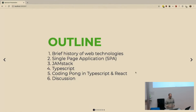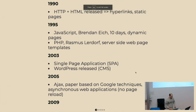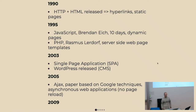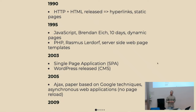Basically, HTTP and HTML came in 1990 and then there were hyperlinks and static pages. One of the things we still have today are hyperlinks — it may seem very simple but it's something that has really defined the web and how it works, and they are still very much used today.